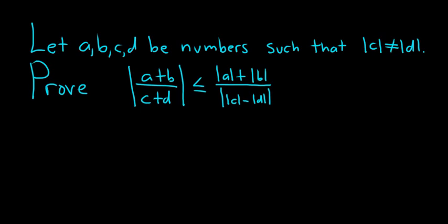Let A, B, C, D be numbers such that the absolute value of C is not equal to the absolute value of D. We have to prove this inequality here — it looks a little bit intimidating. This condition is mainly so that the denominator in this fraction makes sense; we want to make sure that we're not dividing by zero.